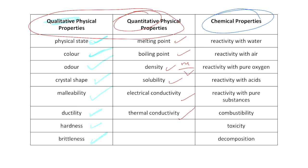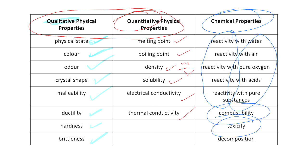For chemical properties, one thing to note is the commonality amongst all of them: they all deal with reactivity. Their ability to react with something is considered a chemical property. This includes how combustible something is, how toxic it can be, and its decomposition.